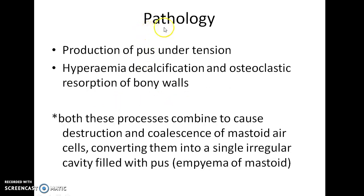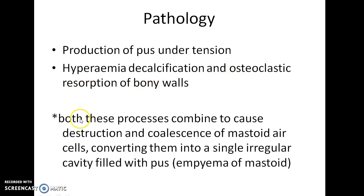Regarding the pathology of acute mastoiditis, there are two important processes that take place: production of pus under tension, and hyperemia, decalcification, and osteoclastic resorption of bony walls. Both processes combine to cause destruction and coalescence of mastoid air cells, converting them into a single irregular cavity filled with pus — that is, empyema of the mastoid takes place.